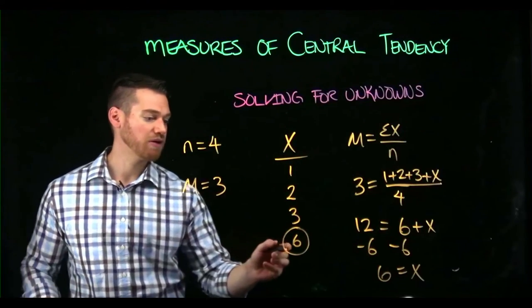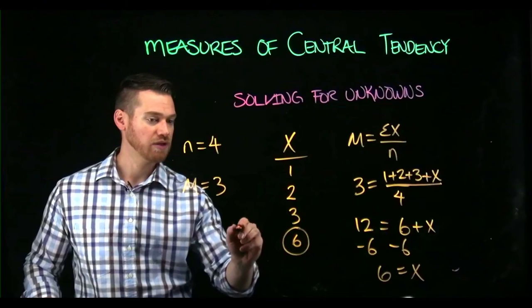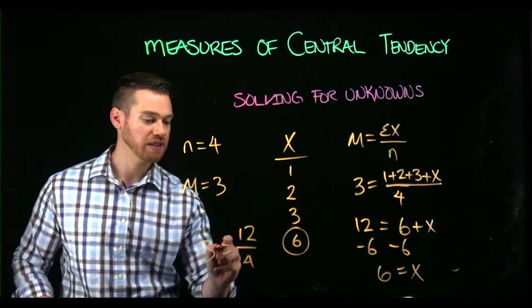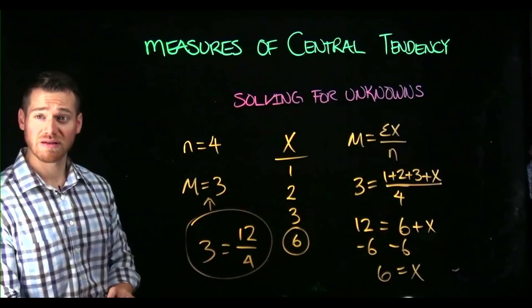If we take these and verify, we have six plus six is 12. 12 divided by four equals three. We can see in fact that that does get us the mean.